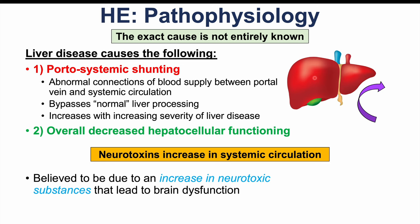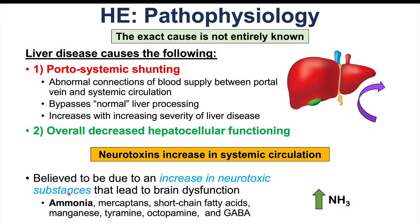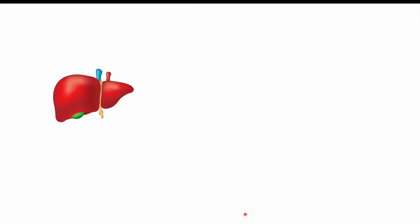There are multiple neurotoxins proposed to cause brain dysfunction. Ammonia is the crucial one and most often taught, but other proposed neurotoxins include mercaptans, short-chain fatty acids, manganese, tyramine, octopamine, and GABA. We'll focus mostly on ammonia, but it's important to note that these other neurotoxins, especially when elevated in the systemic circulation, may also lead to brain dysfunction.